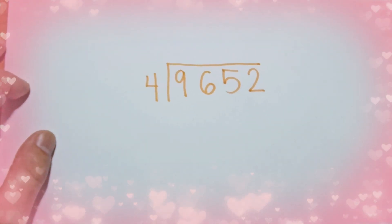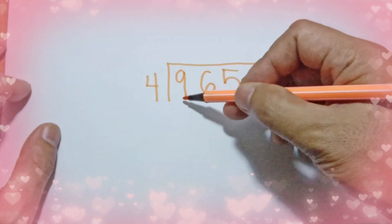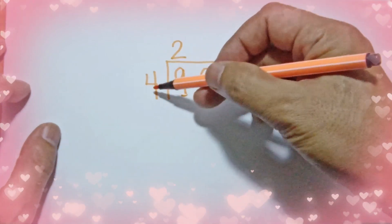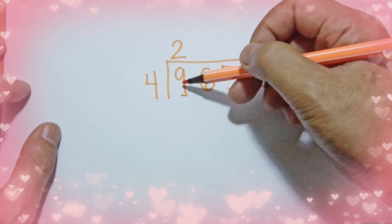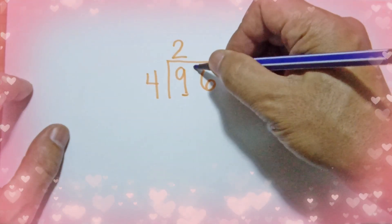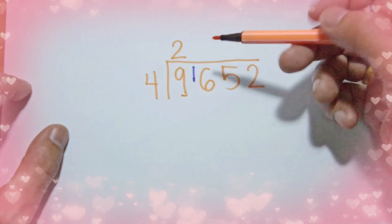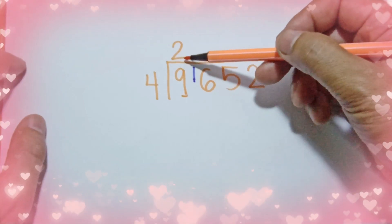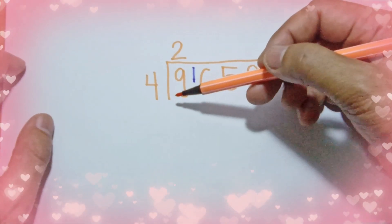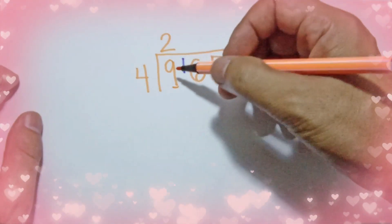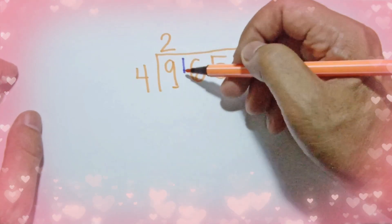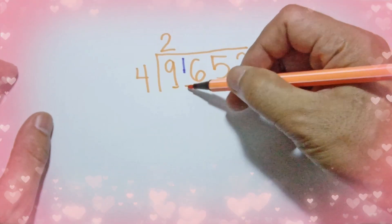So 9652 divided by 4. The first step: how many 4s can you make from 9? We can make 2. The quotient is 2; 2 times 4 is 8, and 9 minus 8 is 1. We put 1 here, so 6 will become 16 because we carry over.